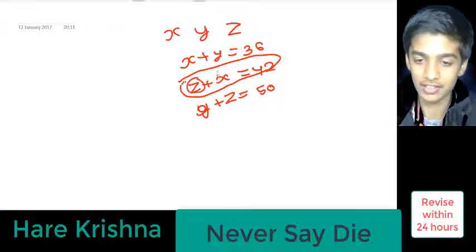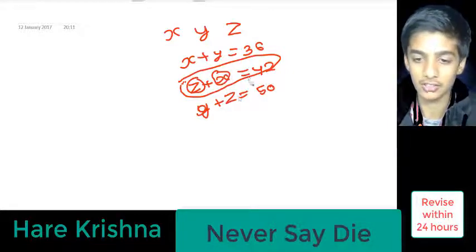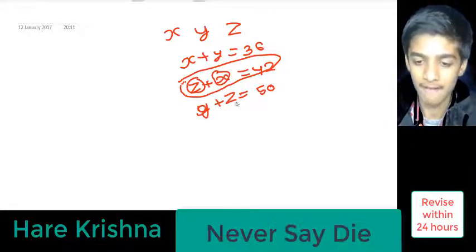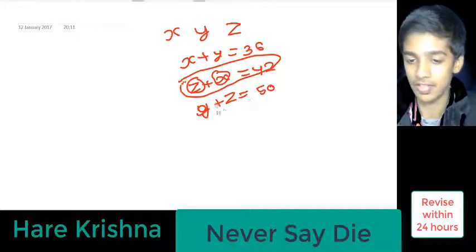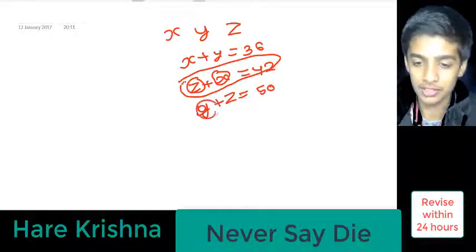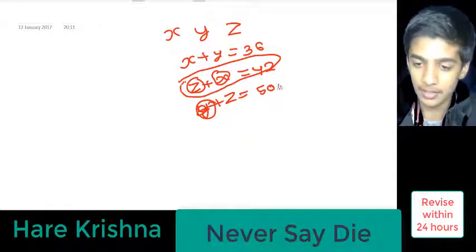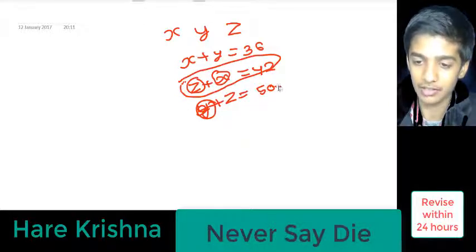It has two values, z and x. So first, we will find the value of z. So we will transpose this y over there. So it will come here and it will be 50 minus y.